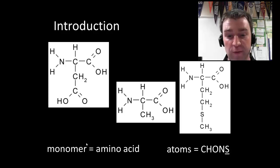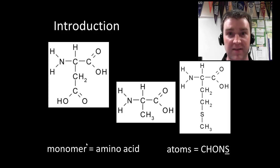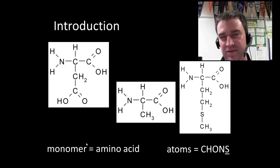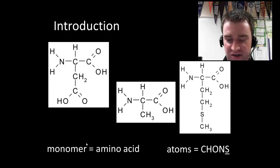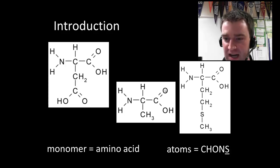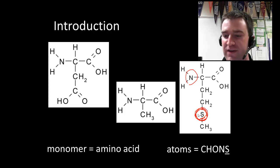To talk about how proteins form, it's good to discuss what makes up proteins. Proteins have monomers — like Legos — that combine over and over to make a protein of a particular size. The monomer of proteins is called an amino acid, and there are 20 different amino acids. Surveying the atoms in amino acids, we find carbon, hydrogen, and oxygen like in carbs and lipids, nitrogen like in nucleic acids, and uniquely, sulfur — which is unique to proteins.